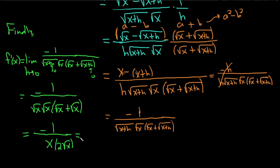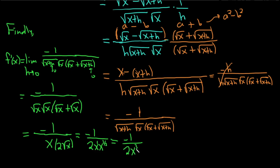So this equals negative 1 over 2x times square root of x. Writing square root of x as x to the 1/2, we add exponents: 1 plus 1/2 equals 3/2. Therefore the derivative is negative 1 over 2x to the 3/2. That is the derivative of this function.